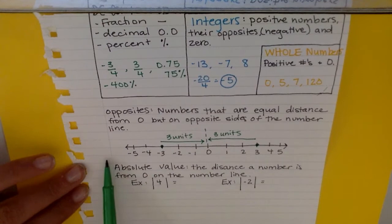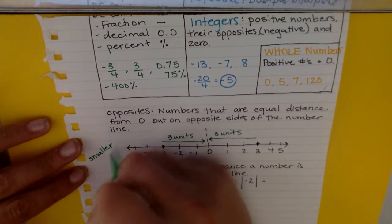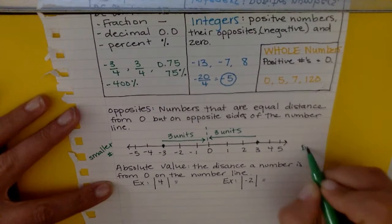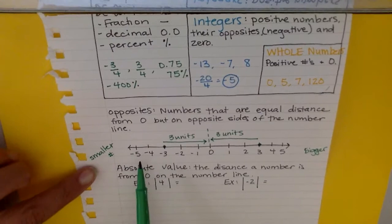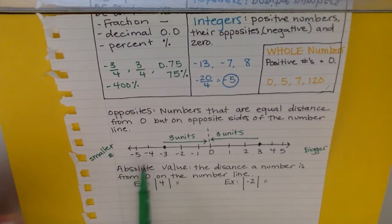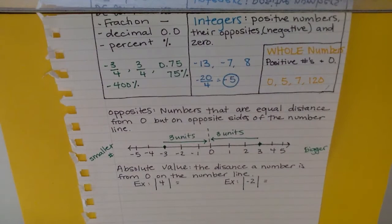Number lines are going to be super useful as we go through this unit because you'll be able to see that the further away from zero we get to the left is where our smaller numbers are, and the further we get to the right is where our bigger numbers are. This is super important especially when we look at smaller numbers because often we think of five is bigger than four, but when we're talking about negative numbers, negative five is smaller than negative four because it is further away from zero on the number line.